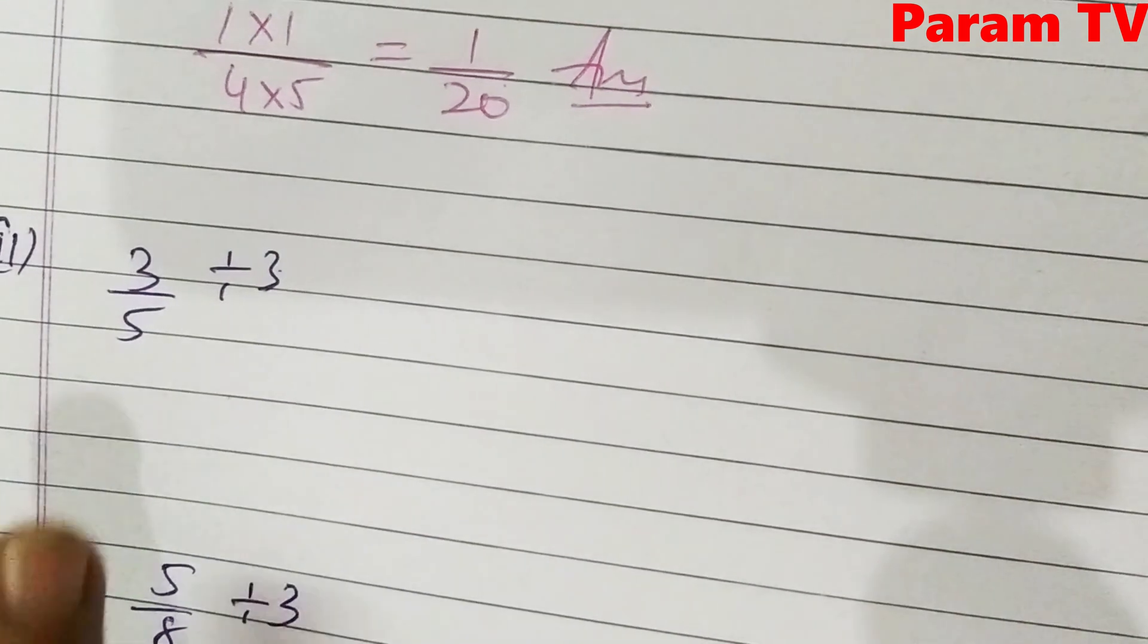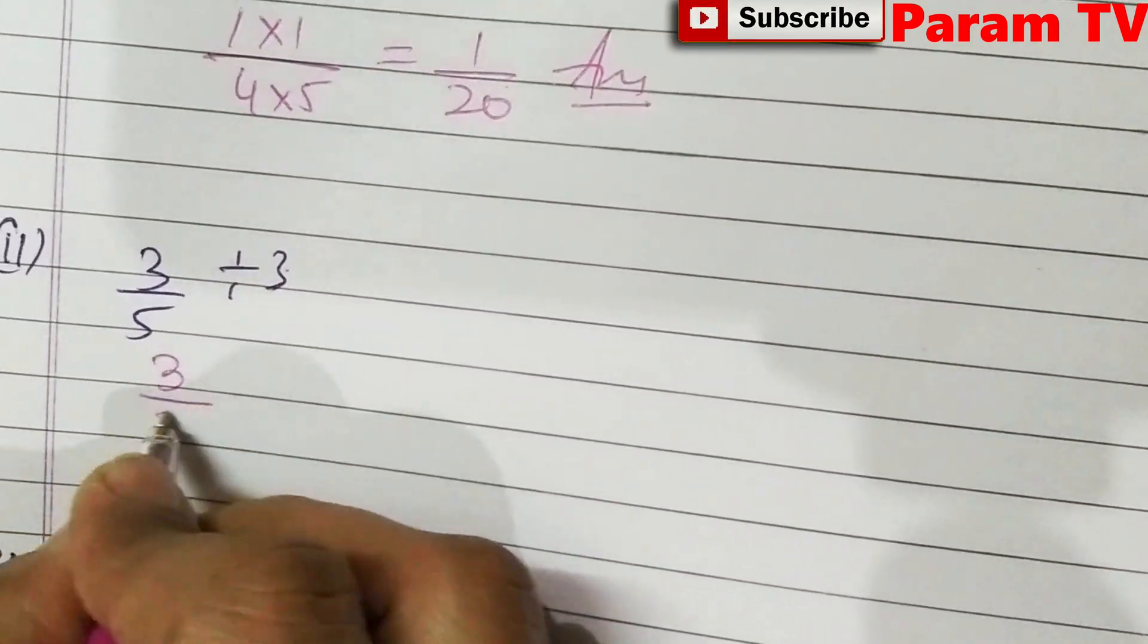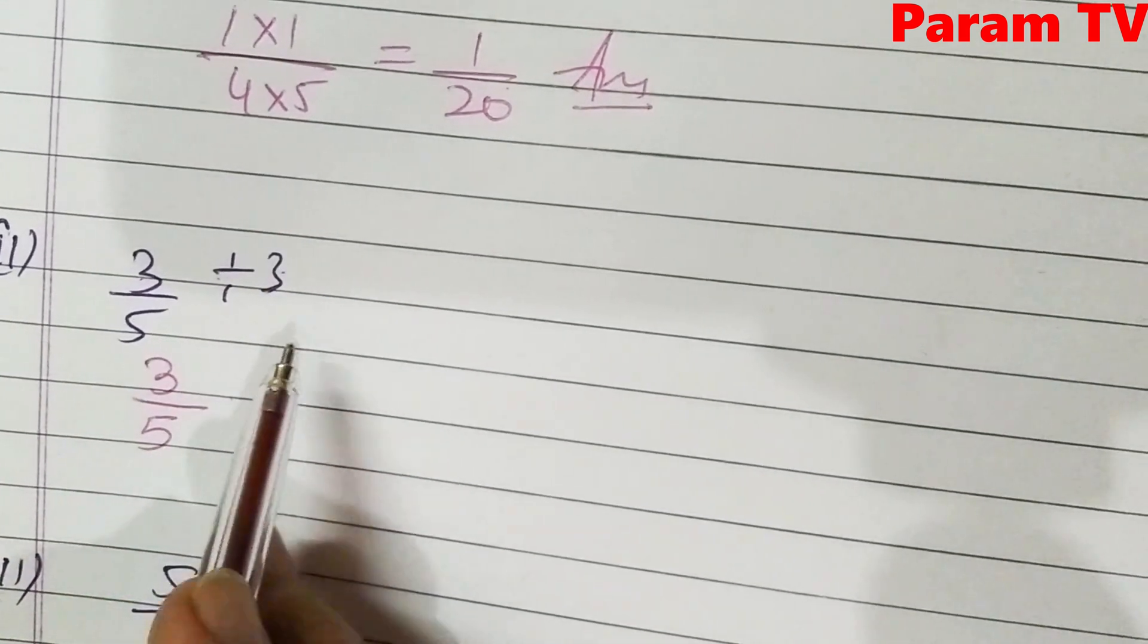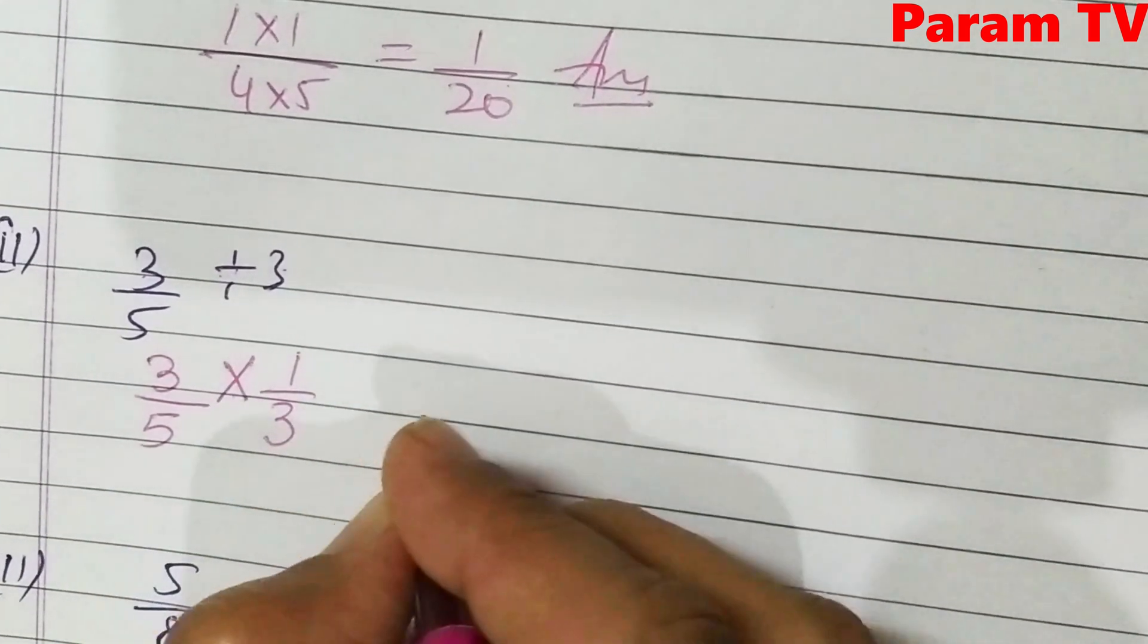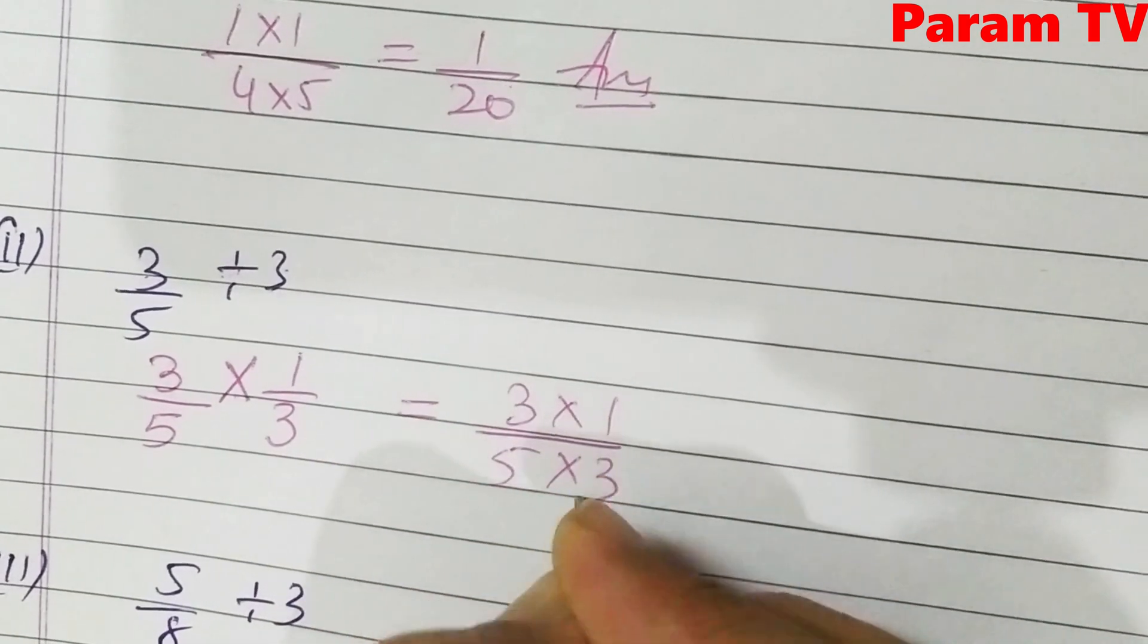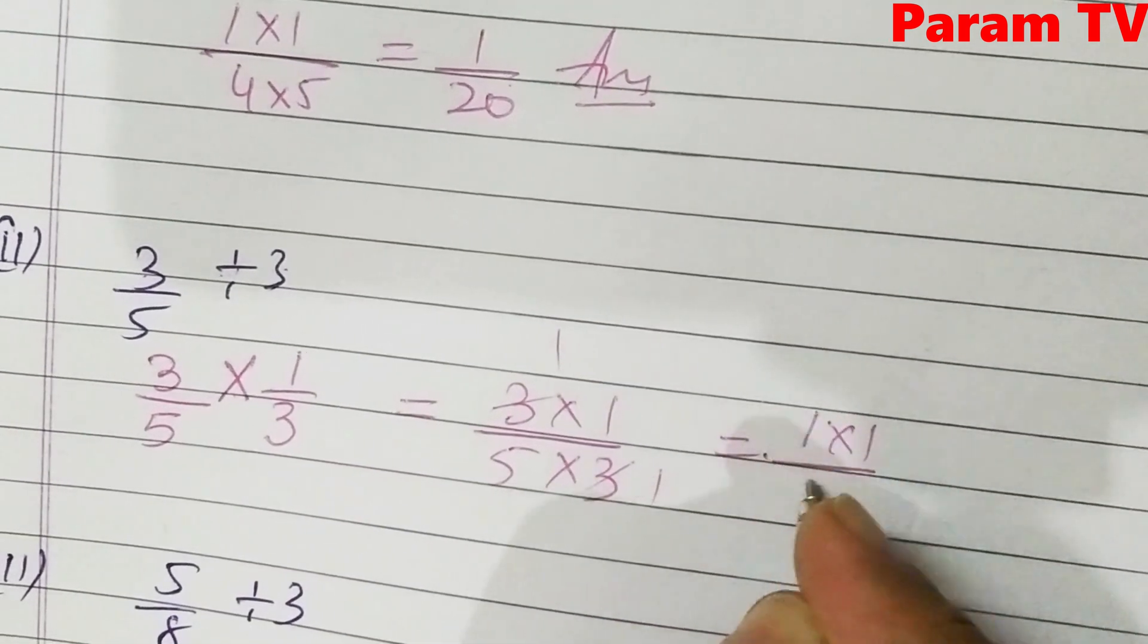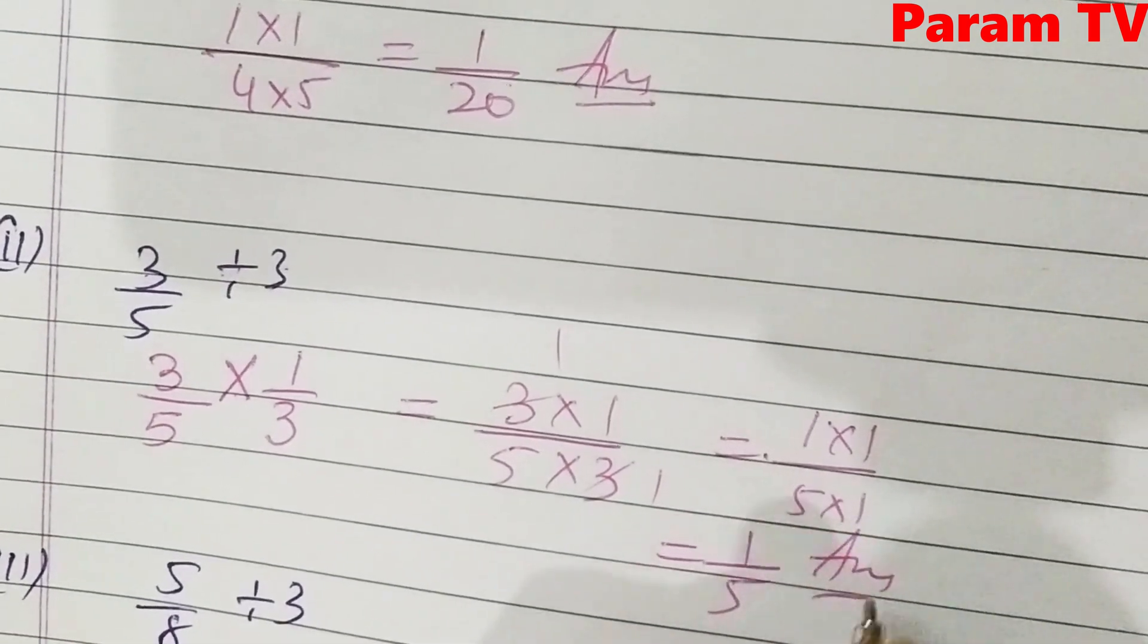Next is 3 by 5 divided by 3. 3 means 3 by 1. This is 3 by 5. Students, you will not do the last number. Divide, which you have written in the previous term, you have to do the reciprocal. Divide, change to multiply. 3 is 1 by 3. Now you will multiply. It will give you 3 into 1 over 5 into 3. This is the answer.